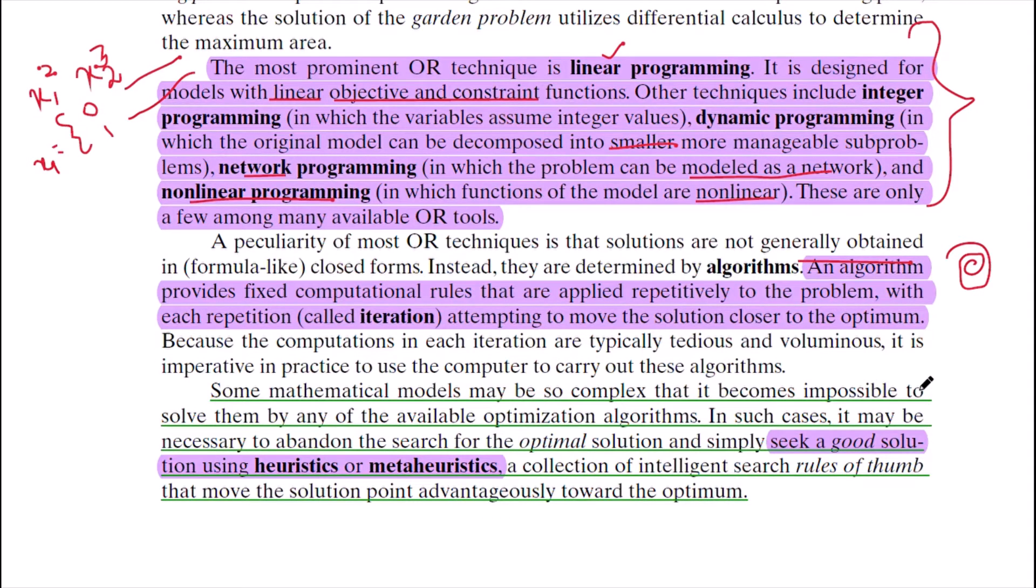And in some cases, the problem or the model may be so complex that we cannot find the optimal solution. Therefore, we do some compromises and find out a good solution, may not be the best but a good solution using heuristic or meta-heuristic, that is using probability to find out a solution which tends to be best.